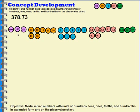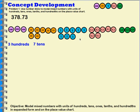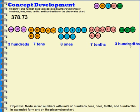Now for each set of these, I'm going to write it in unit form. So I'm going to start over here with my three hundreds — this is representing three hundreds. This one is seven tens. Here I have eight ones. In this one I have seven tenths. And over here I have three hundredths. This is representing this number in disks and here I have it written as unit form.